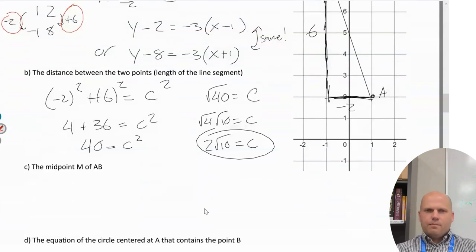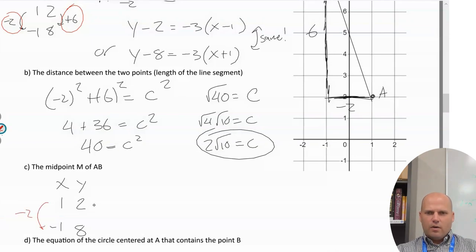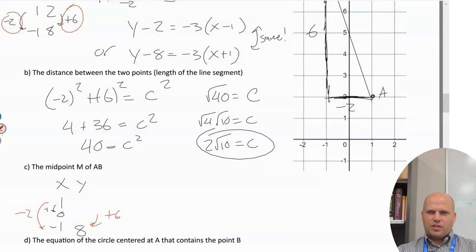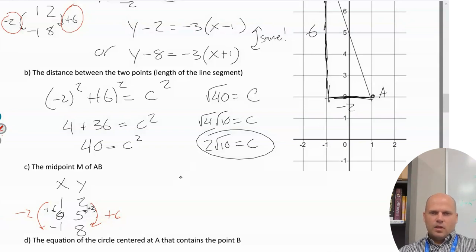Find the midpoint of AB. I like to use the distances we already found: go down 2, up 6, and go halfway between both. Go down 1 from 2 — I get to zero for x; go up 3 from 2 — I get to 5 for y. The midpoint is (0, 5). You can also find the average of the two coordinate values. The midpoint is a point in the middle.